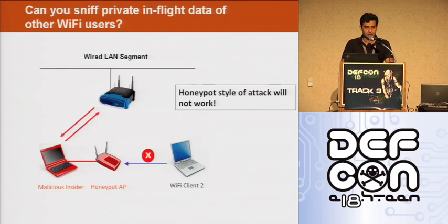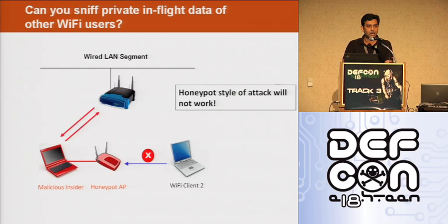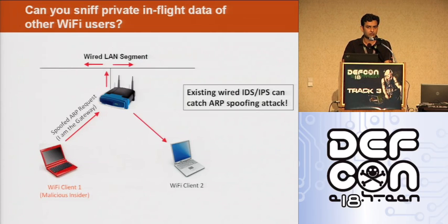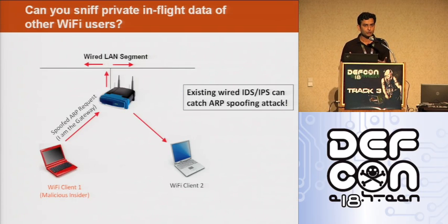So what are the other options available? We can think of launching a man-in-the-middle attack in a very conventional, old-style way with the help of an ARP spoofing attack. But today's networks are much more secure than they used to be. There are security systems which can detect ARP spoofing attacks — wired IDS, IPS, or even switches have capability to detect it. So if you are going to launch an ARP spoofing attack, the chances of getting detected are very, very high.